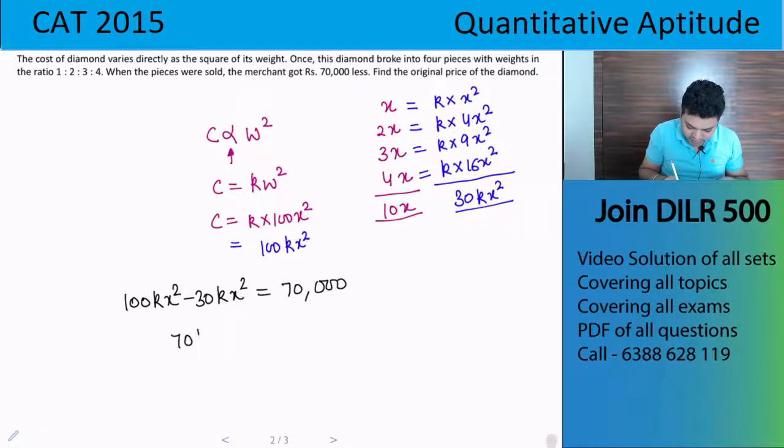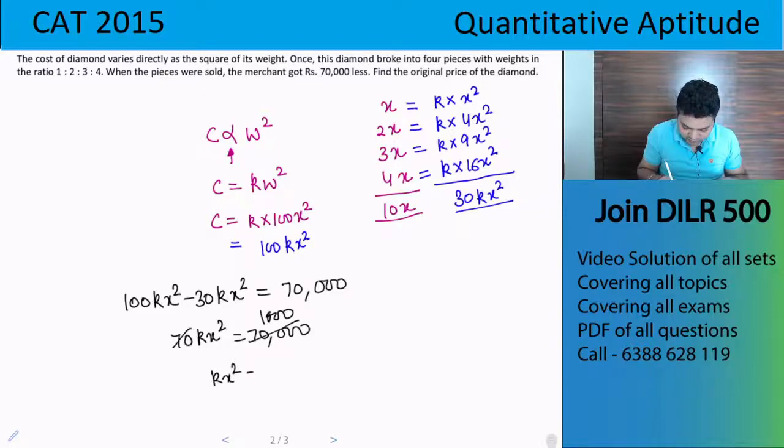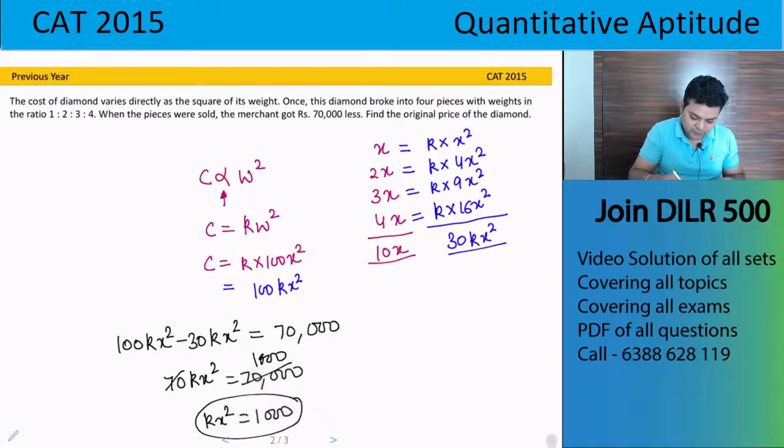That gives us 70k x square equals to 70,000. This gives us 1000. So k x square value is 1000. Now what is asked? Find the original price of the diamond.